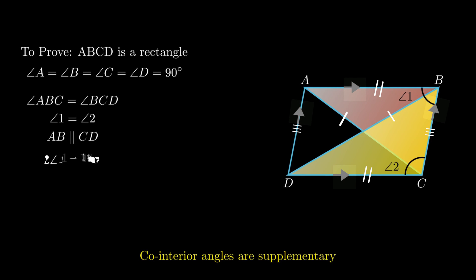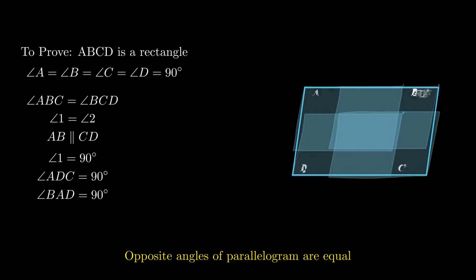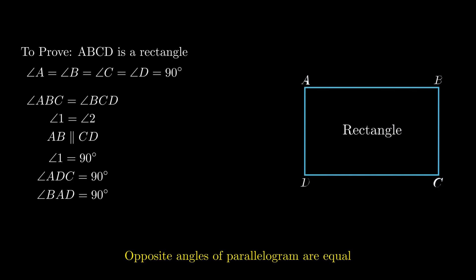On transposing we get angle 1 as 90 degrees. Also, opposite angles of parallelogram are equal, therefore angle ADC equals angle ABC and angle BAD equals angle BCD, which is equal to 90 degrees.